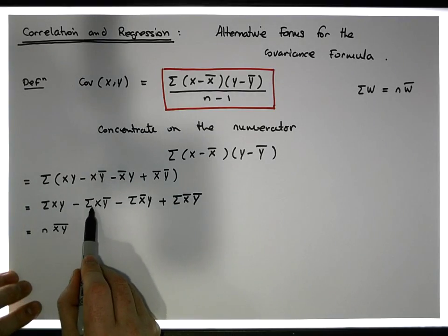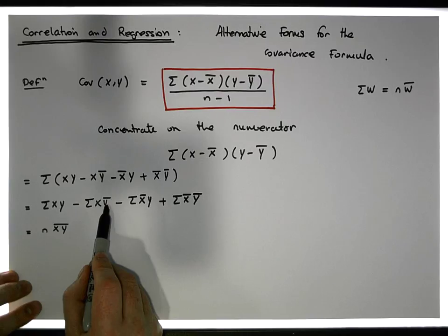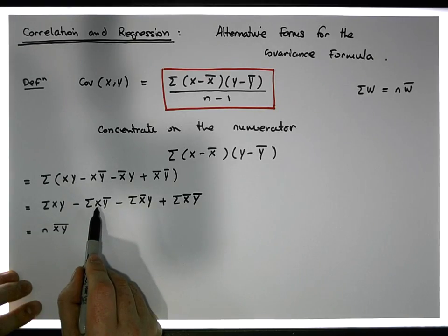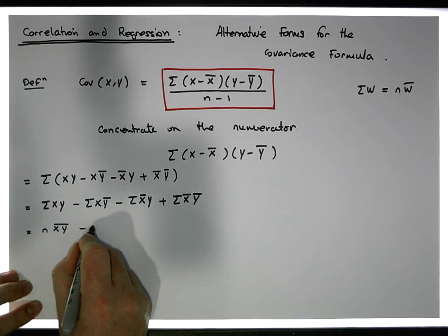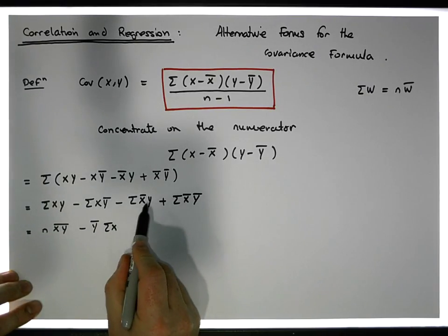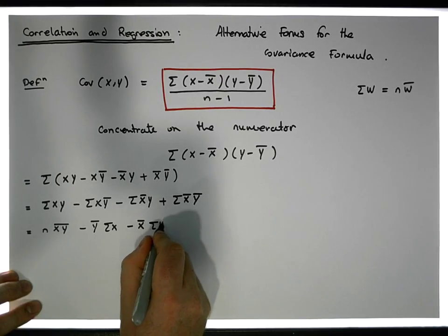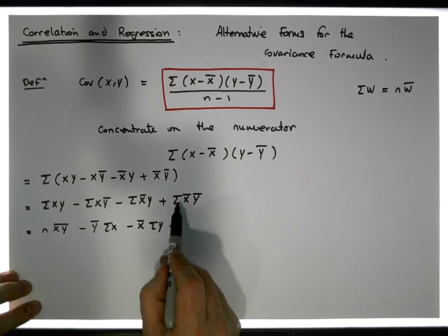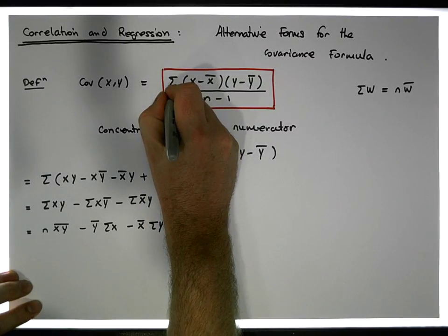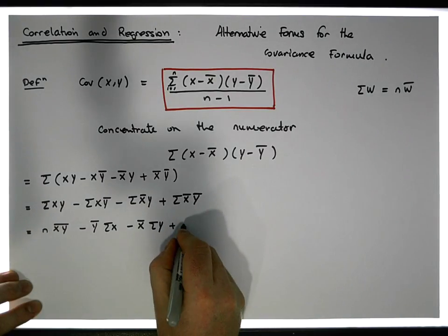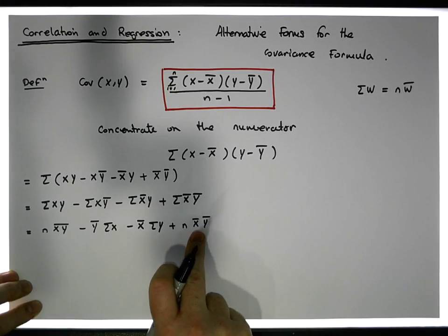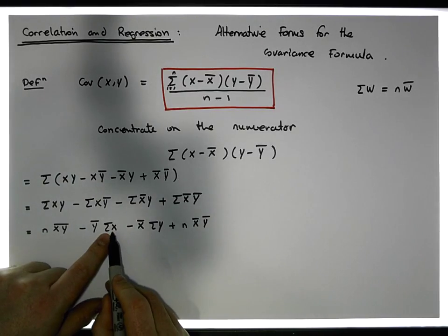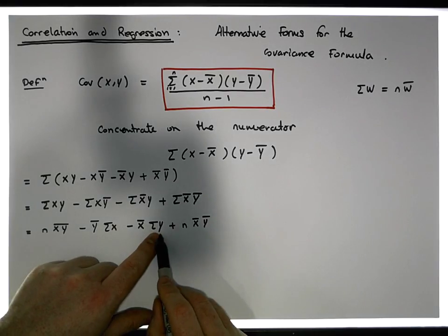For the next term, we have the sum of xᵢ times ȳ. Since ȳ is a constant with respect to the summation index i (which runs from 1 to n), ȳ can be taken outside the sigma, giving minus ȳ times the sum of x. Similarly, x̄ is constant, so that term becomes minus x̄ times the sum of y. Finally, since both x̄ and ȳ are constants and the summation runs from 1 to n, the last term is plus n times x̄ȳ.